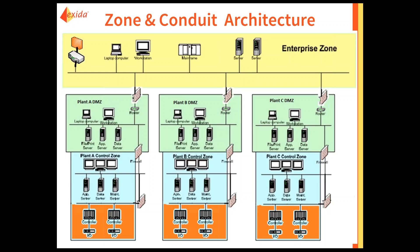The DMZs are commonly referred to as level 3.5 — a semi-trusted network. The DMZ is your connection point to allow traffic to flow from the enterprise to the DMZ, and from the control areas to the DMZ, but the enterprise is never allowed to communicate with the control area directly and vice versa. Below the DMZ we have an additional firewall communicating with the control zones in three plants. Our three servers — the app server, data server, and maintenance server — have lost their dual-NIC capability and must now communicate through the main control LAN down to the controllers. There is an additional firewall at this level.